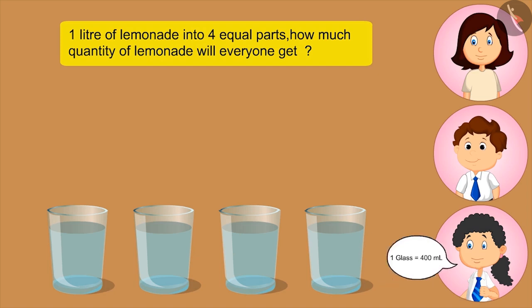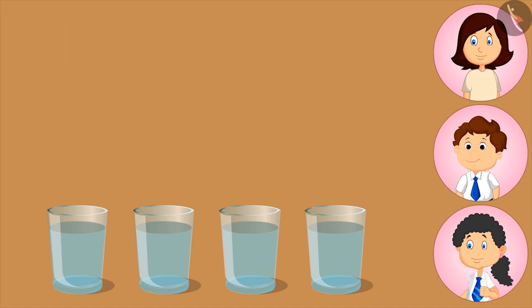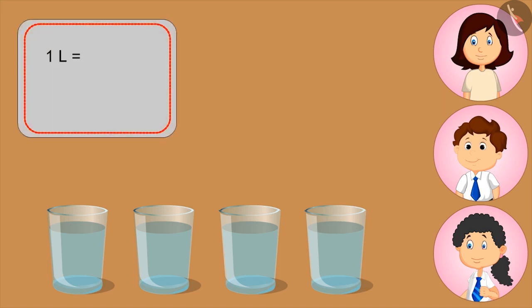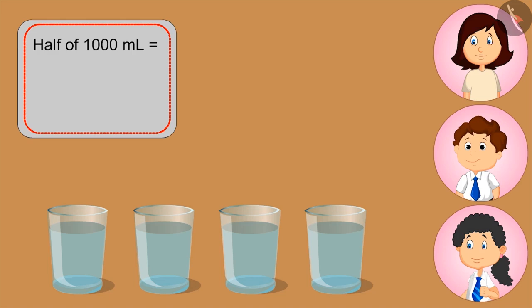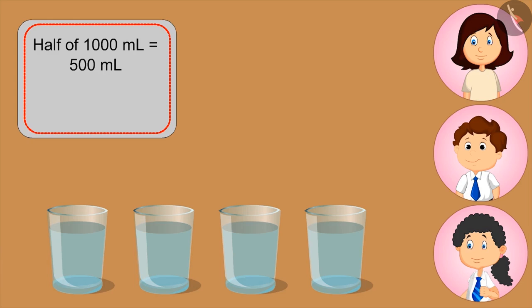Four hundred ml? No, this is not right. You tell, Bholu. I don't know. Please you explain, Mom. How many milliliters are there in a liter? Thousand milliliters. Correct. Now if I fill these two glasses, then how much lemonade will be left in the jug? Half the jug is still full. What is the half of a liter? Kids, you can pause the video and think about the answer. Five hundred ml. This means two glasses contain five hundred ml of lemonade.